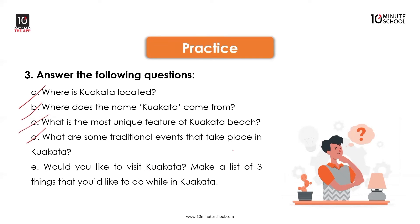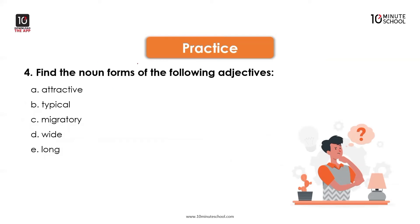Would you like to visit Kuakata? Make a list of three things that you would like to do while in Kuakata. Yes, I would like to visit Kuakata. The three things I would like to do are: enjoy the full view of rising and setting sun, bathing in the sea, and attending a traditional event. Find the noun form of the following adjectives.